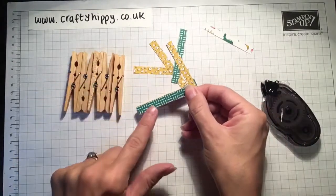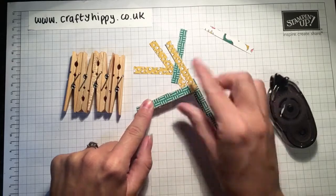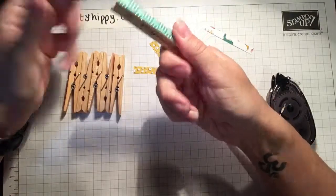And then after you've stuck your paper on, you could choose to lacquer your pegs. Obviously, be careful not to stick the mechanism together so that you can't use them.